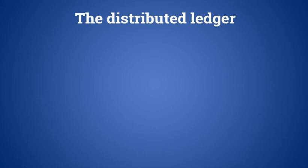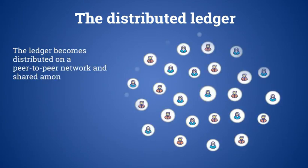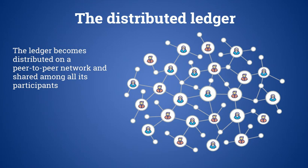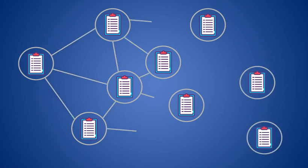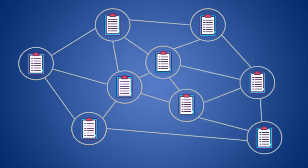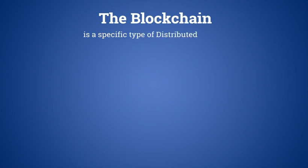With distributed ledger technology, here's a further evolution: the ledger now becomes distributed on a peer-to-peer network and shared among all its users. Therefore, all nodes of the network own a copy of the ledger itself, which is constantly updated and contains the same information. A distributed ledger is more secure because in order to change a single recorded transaction, it is necessary to modify all the copies in the network.